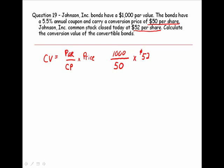Our conversion ratio in this example is 20 shares, because if we take $1,000 divided by 50, we get 20 shares. Times the current market price per share of $52 gives us a conversion value of $1,040.